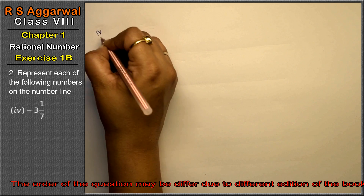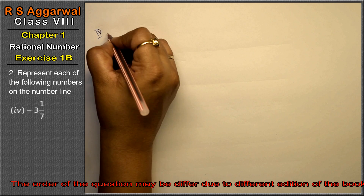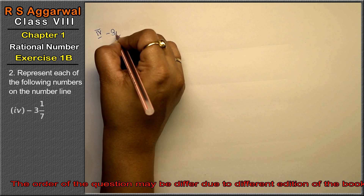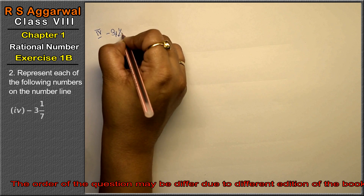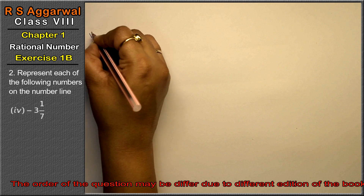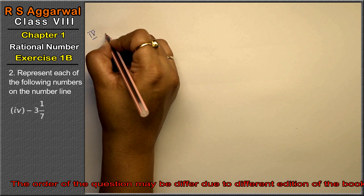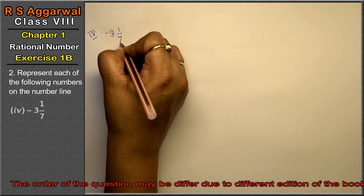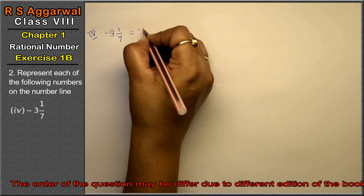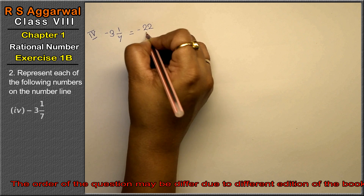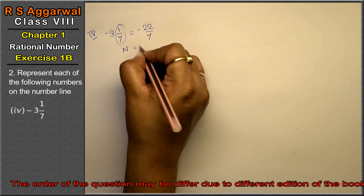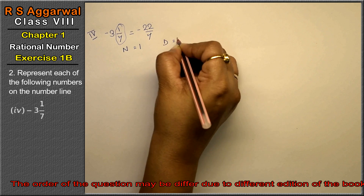Let's do 4th part. 4th part is minus 3 whole 1 upon 7. If we convert this to a fraction: 3 times 7 is 21, plus 1 is 22 upon 7. So numerator is 1 and denominator is 7. If we do this as a fraction it comes to minus 22 upon 7.